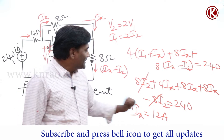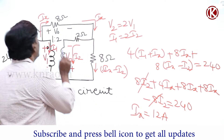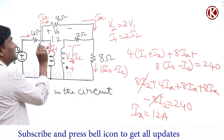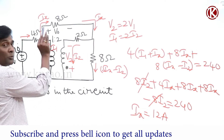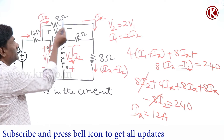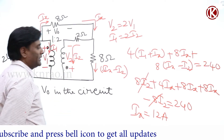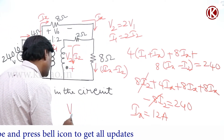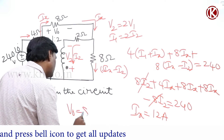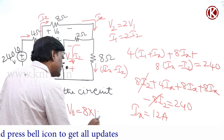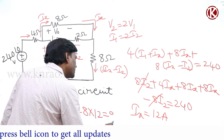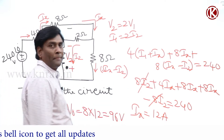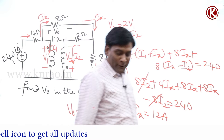So if Ix is 12 amperes, the voltage across the 8-ohm resistor — with plus at the current entry point — is 8 into Ix, which is 8 into 12. Therefore V0 equals 8 into 12, which is 96 volts.